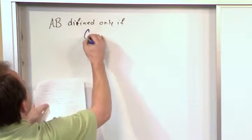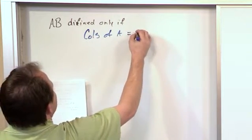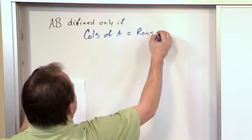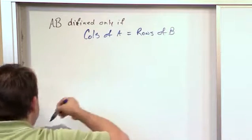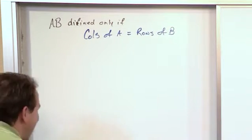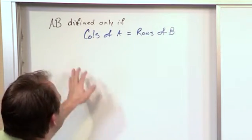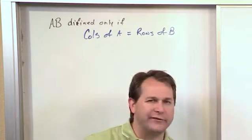The columns of matrix A is equal to the rows of matrix B. And that becomes obvious when you learn how to multiply these things together. But I'm writing it out in words so that you have something to anchor yourself to in the beginning.